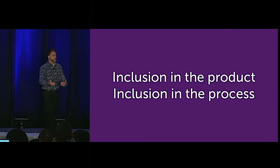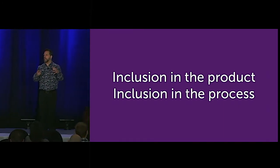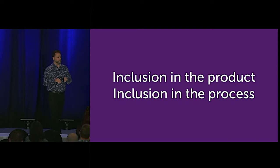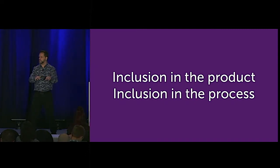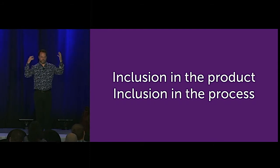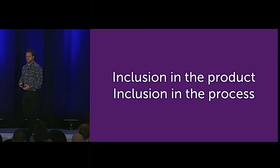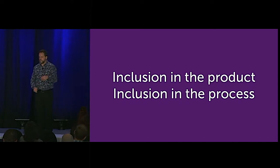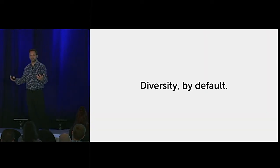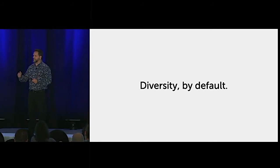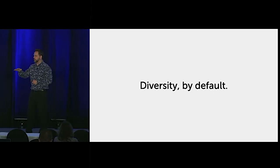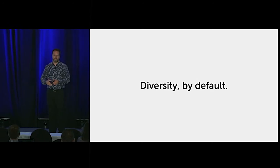When we're talking about inclusion in the process, that is all about how do we make sure that we are empowering people with disabilities to be part of the design process itself. Not just do their needs get reflected in this process, because we can do that just by using our minds, thinking about it. But how do we actually include people with disabilities in the design process itself? The way to do that is to embrace this concept of diversity by default — that is our new normal, that we have no normal. We embrace diversity as the thing we take into any design process.